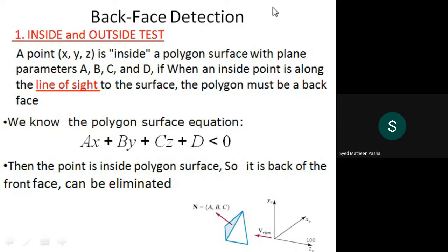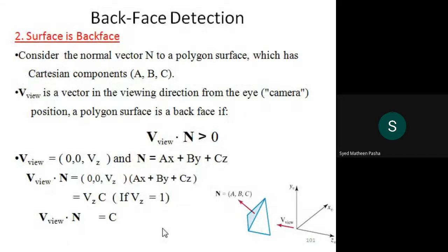The polygon surface equation is: ax + by + cz + d, where d is a constant. If this value is less than zero, the point is inside the polygon surface — it is behind the front face and can be eliminated. By considering this equation, we know the inside point is along the straight line drawn, indicating the back end of the object with respect to the viewer, and that area can be eliminated to get just the front face.